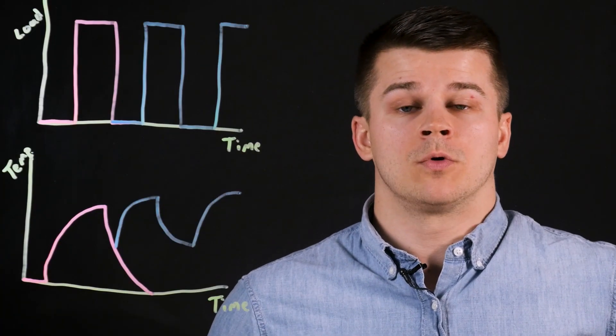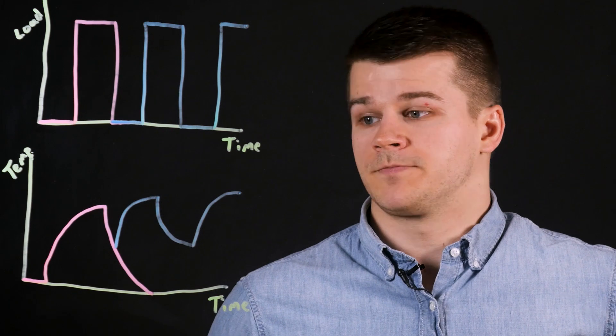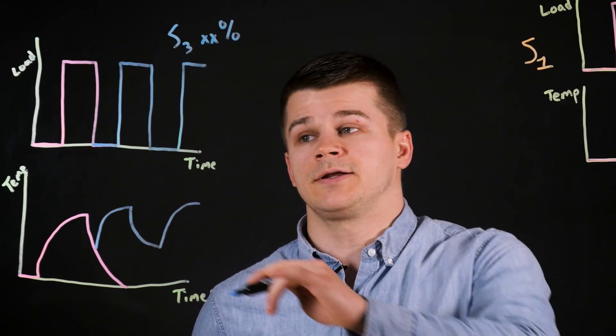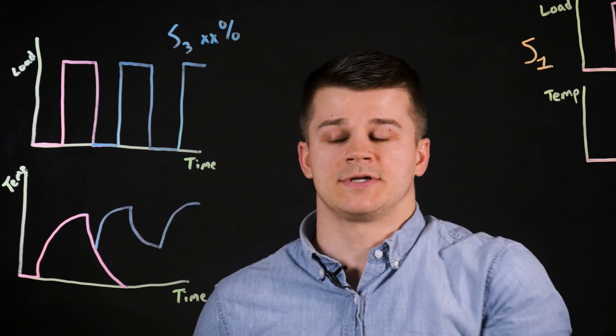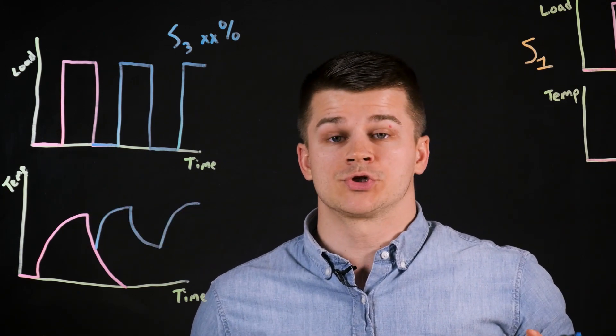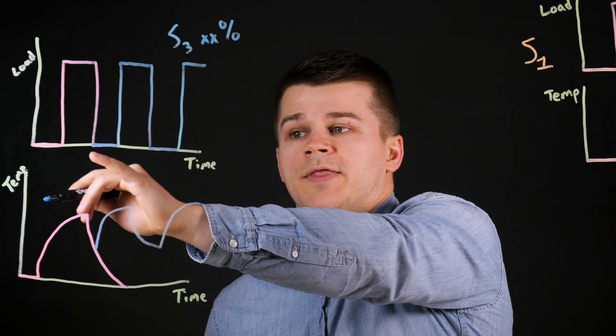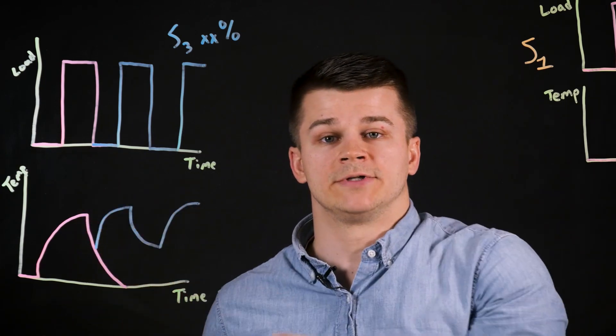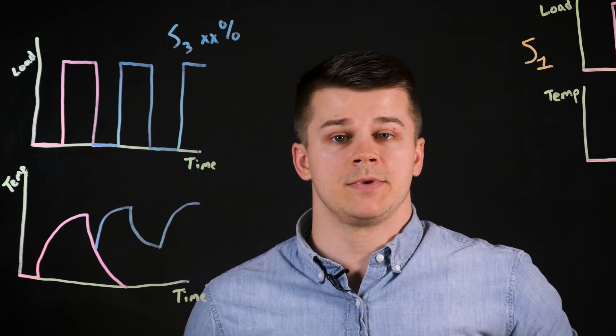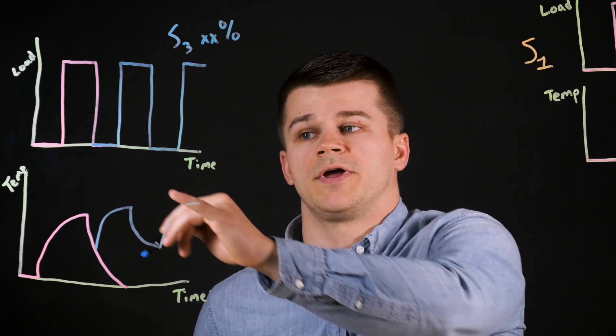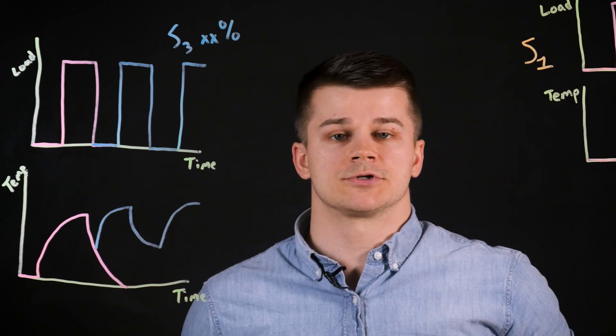This graph shows S3, or intermittent periodic duty. This type of duty cycle has identical cycles of a constant load followed by a period of rest, repeated over time. It's similar to short-term duty where the constant load is applied, and then when it's at rest, the motor is allowed to cool down. Unlike short-term duty, it's never allowed to reach the ambient temperature of the environment, but then the load is reapplied so the temperature spikes back up.